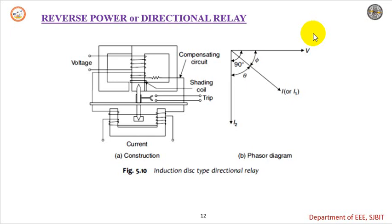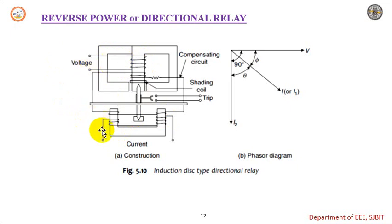Let us understand how this reverse power or directional relay will operate. This is the simple diagram of the induction type of directional relay. We can see we have two coils here. We are using two quantities for energizing the two coils — one is voltage and the other is current. This is a disk. Due to the voltage coil there will be flux, and due to the current coil there will be flux. The interaction of the two fluxes will produce the torque on the disk.